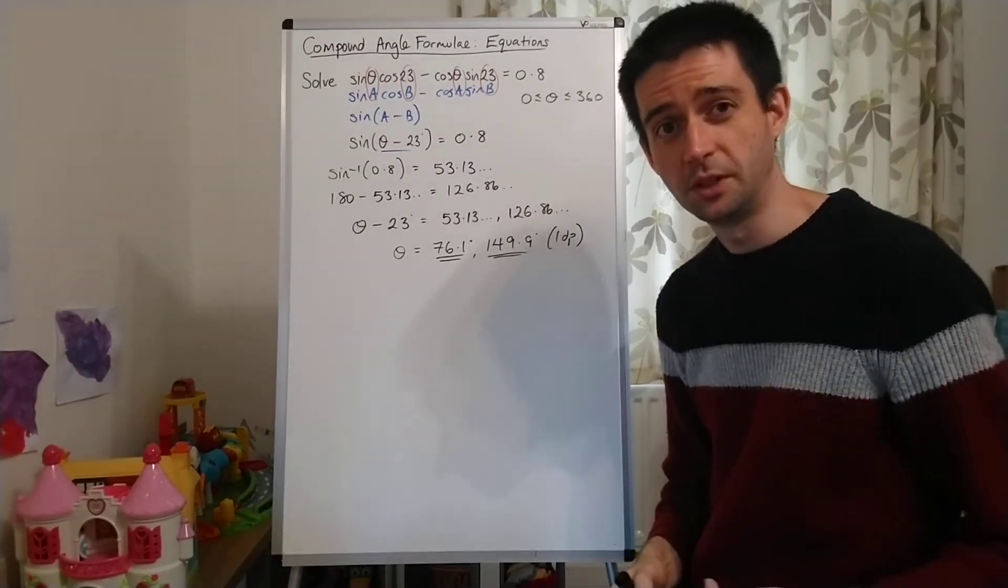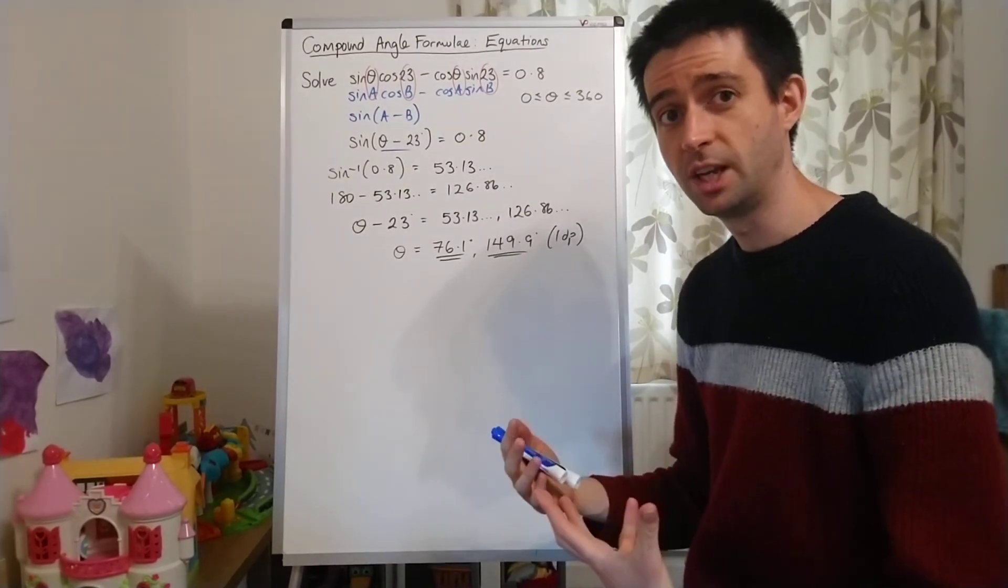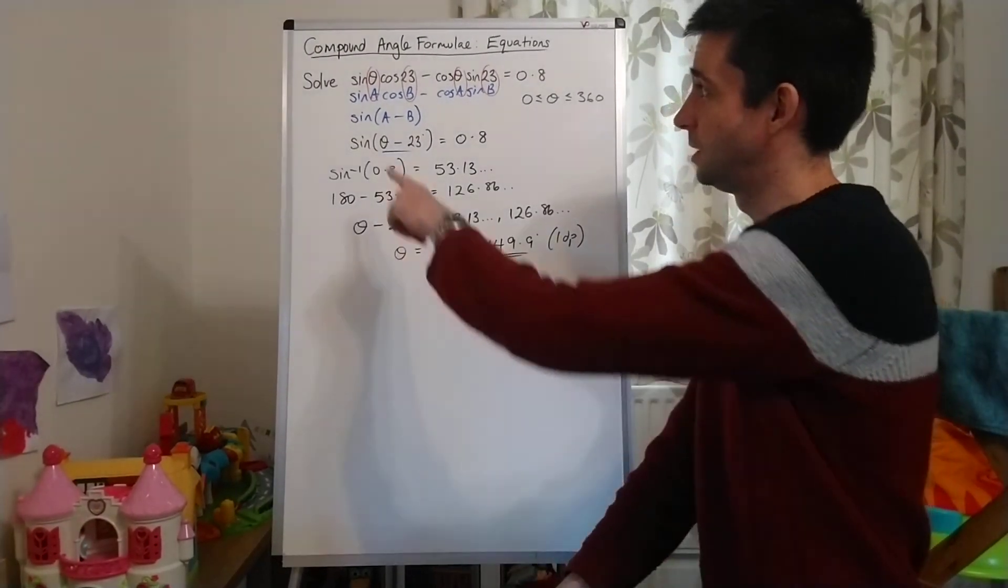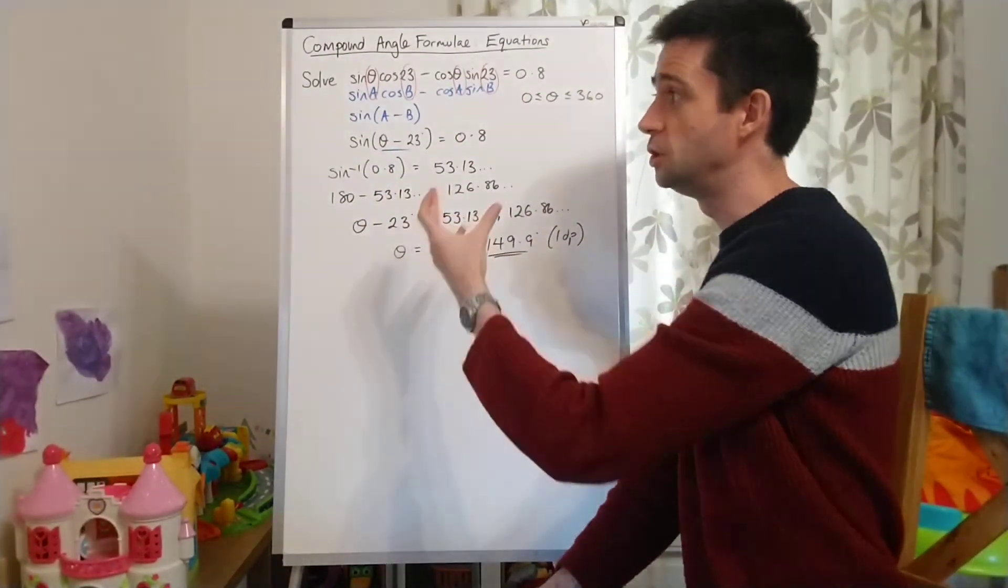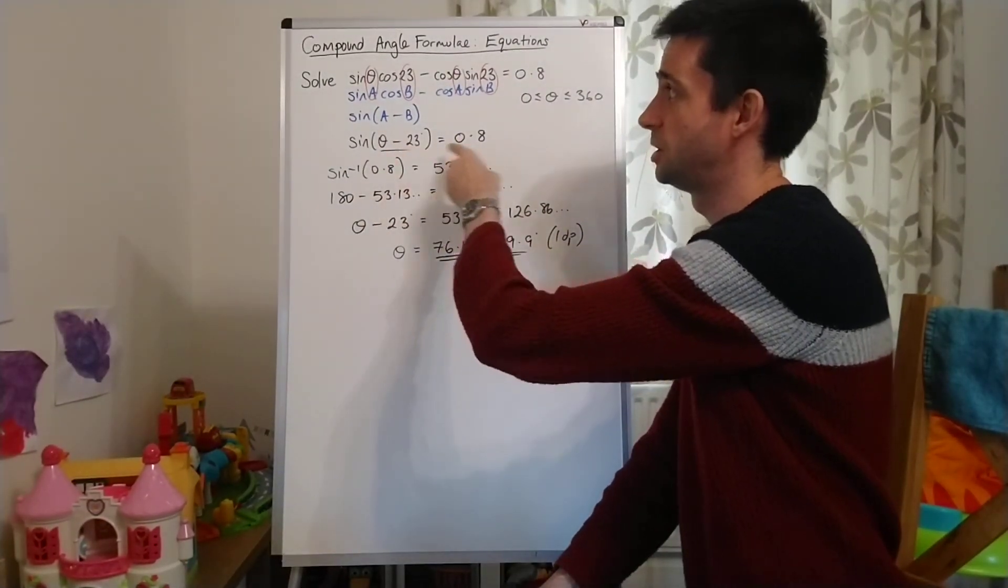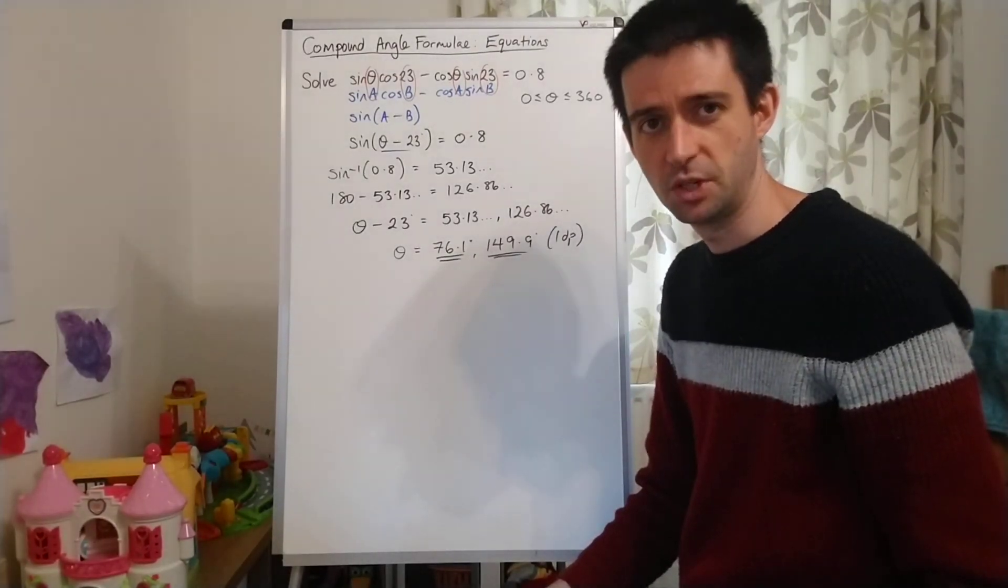So the actual solving the trigonometry bit of this question wasn't that difficult. The tricky bit at the start was to realise that what we had here was a compound angle sine identity, and we could use our knowledge of that to form a much simpler equation to solve. And then that was job done. I'll see you in the next video.